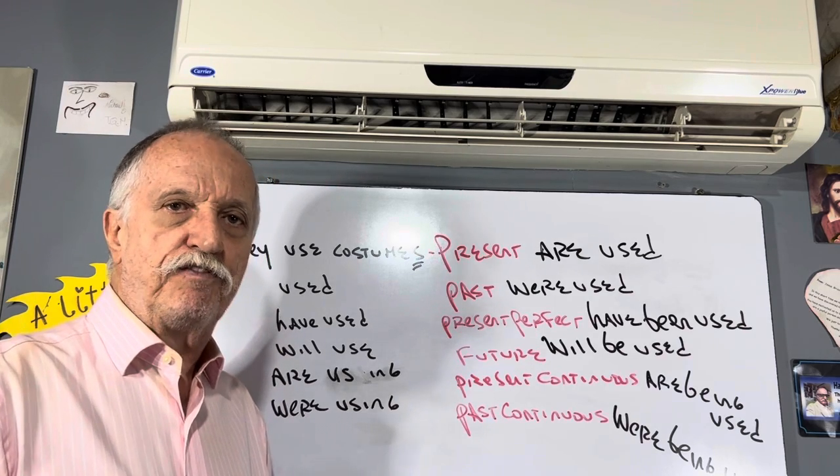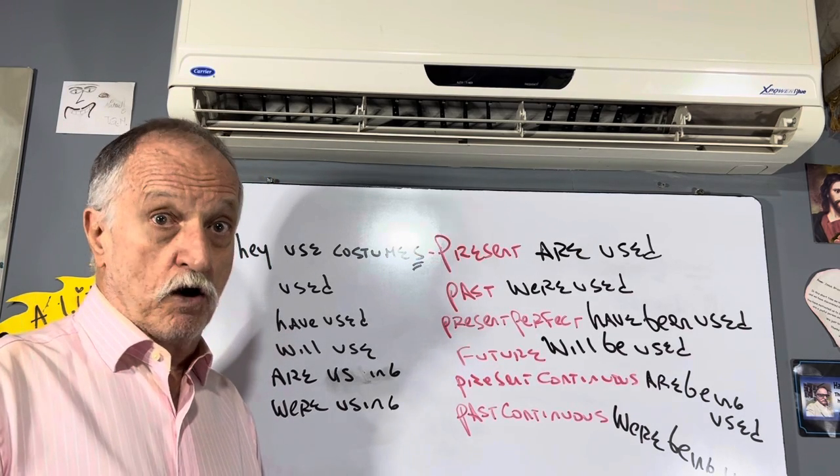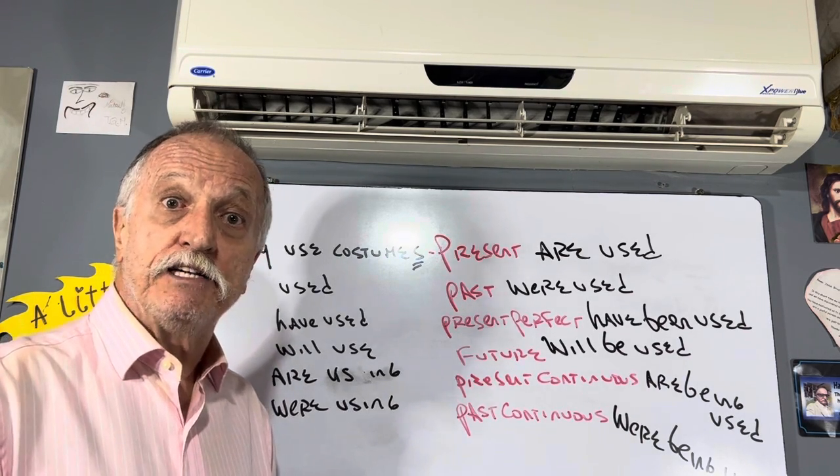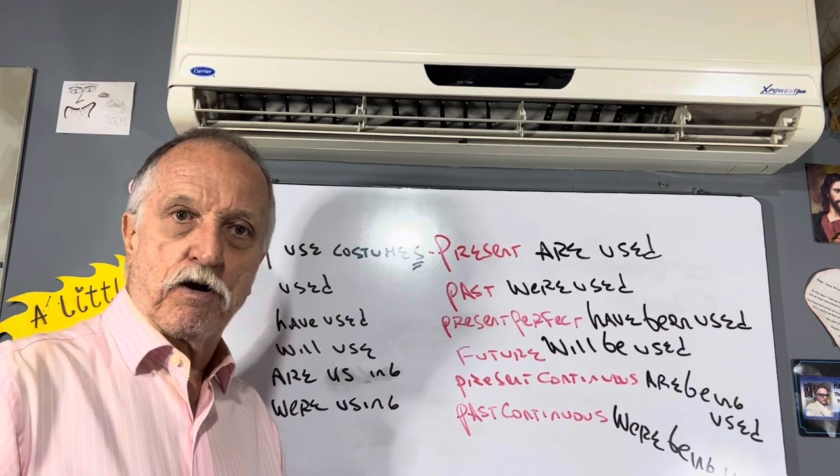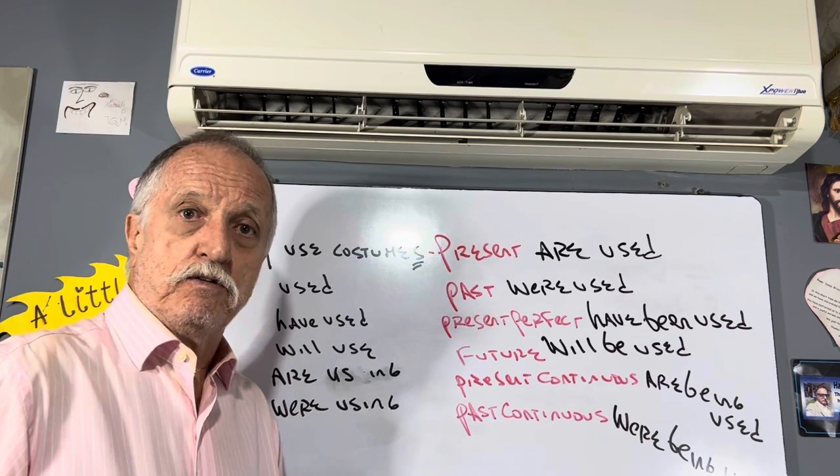All grammar can be conjugated into future: are going to be used, had been used—past perfect, future going to. All grammar.